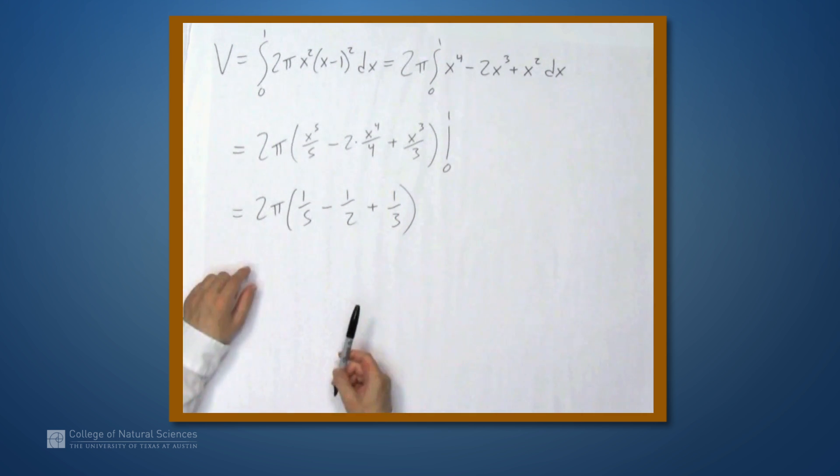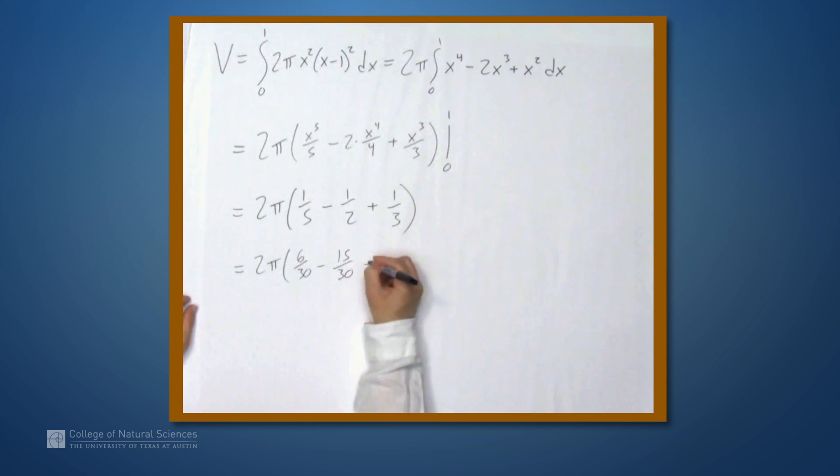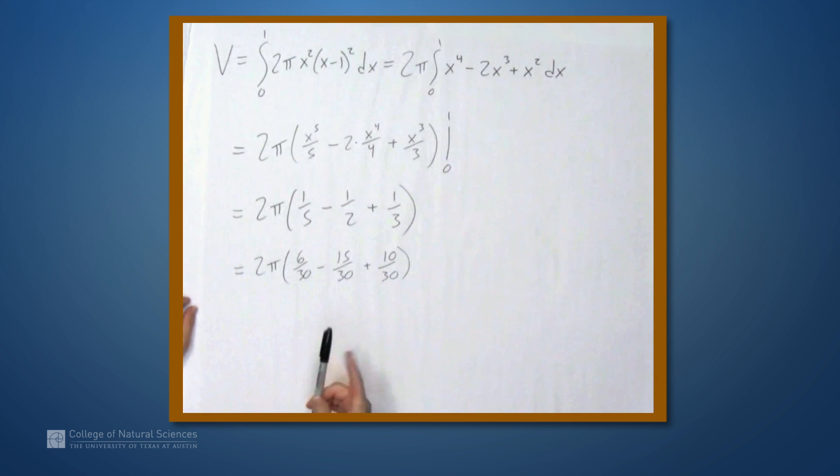So, we can leave the answer like this, but let's actually simplify it a little bit more. So, 2π, and let's get all these things over a common denominator. The common denominator in this case is going to be 30, so this is 6 over 30 minus 15 over 30 plus 10 over 30.